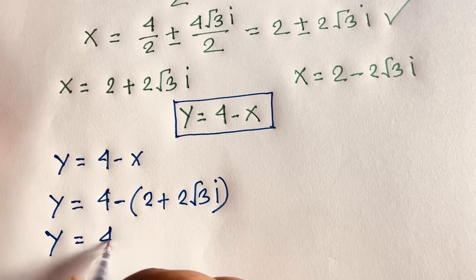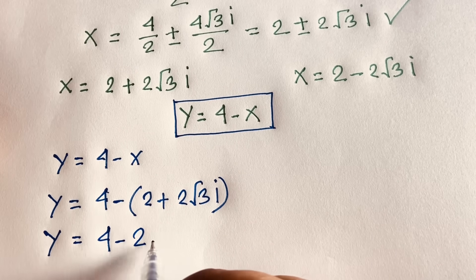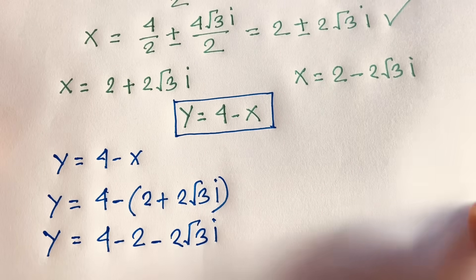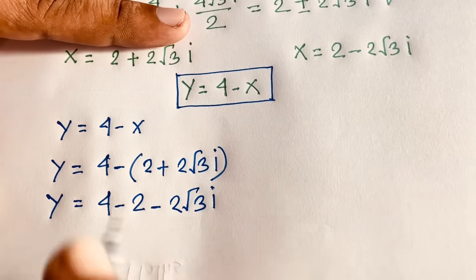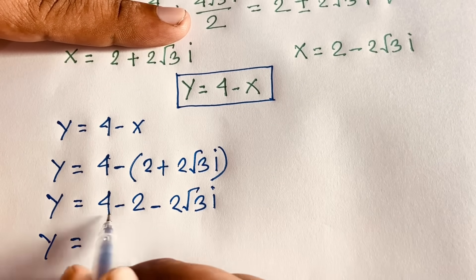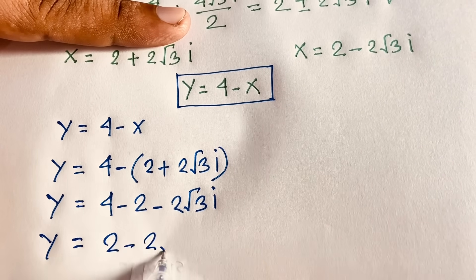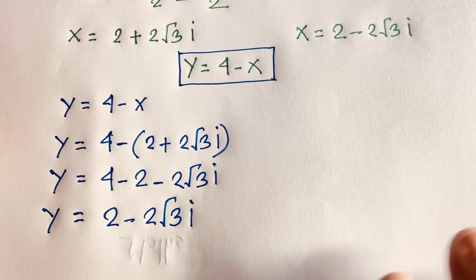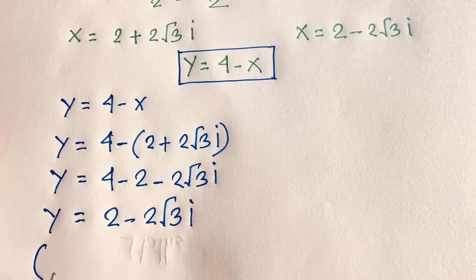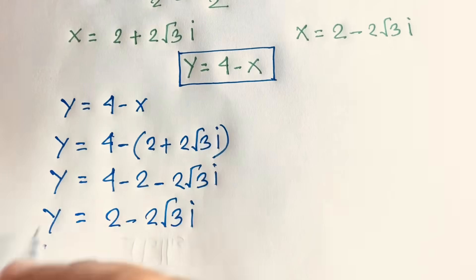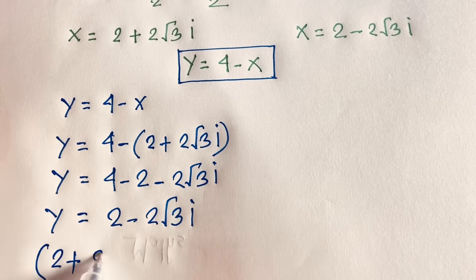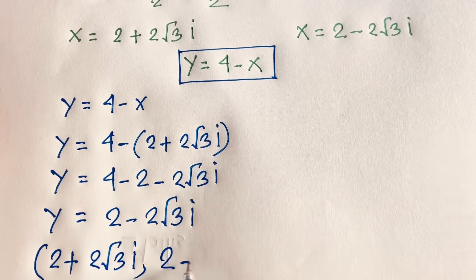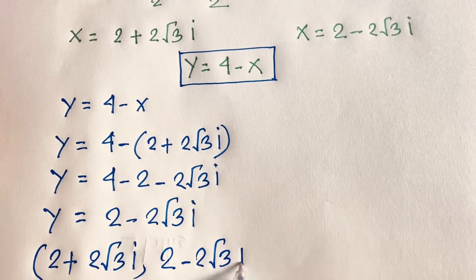Simplifying: y equals 4 minus 2 minus 2√3i, so y equals 2 minus 2√3i. Therefore, when x equals 2 plus 2√3i, y equals 2 minus 2√3i.